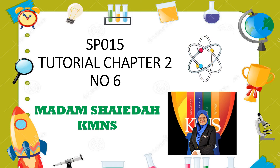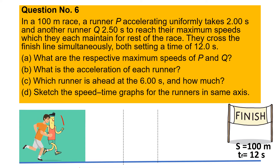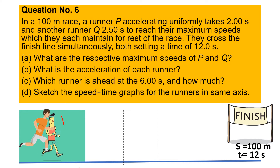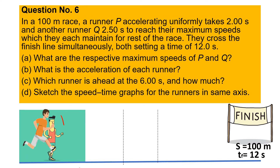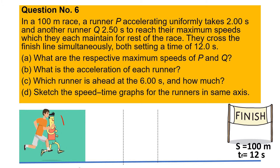Today we will do a tutorial on Chapter 2, Question Number 6. In a 100-meter race, runner P accelerating uniformly takes 2 seconds and another runner Q takes 2.5 seconds to reach their maximum speed, which they each maintain for the rest of the race. They cross the finish line simultaneously.